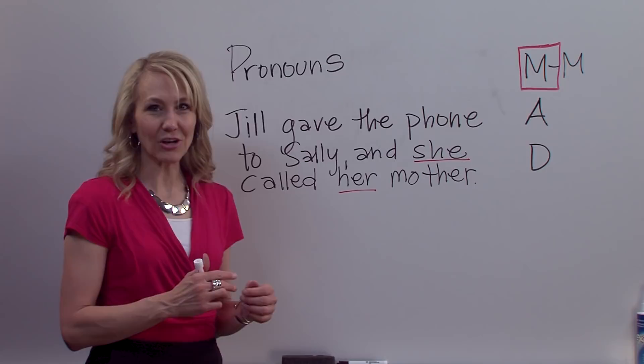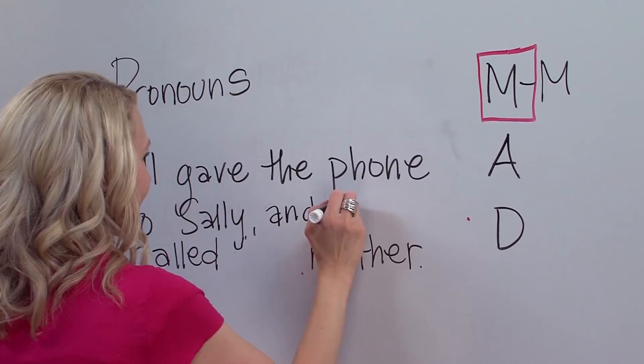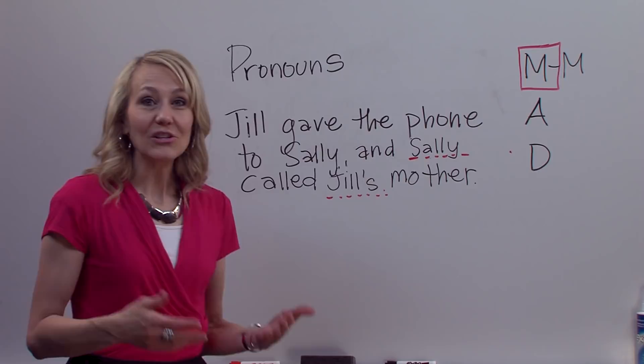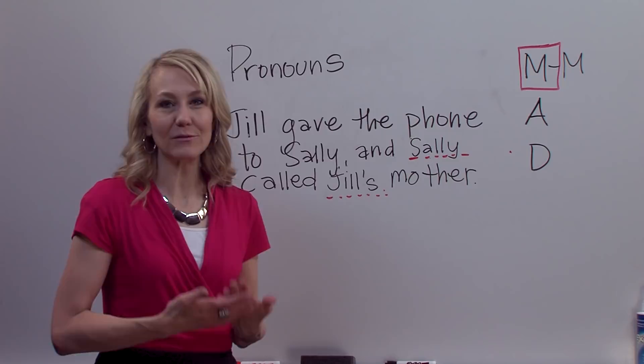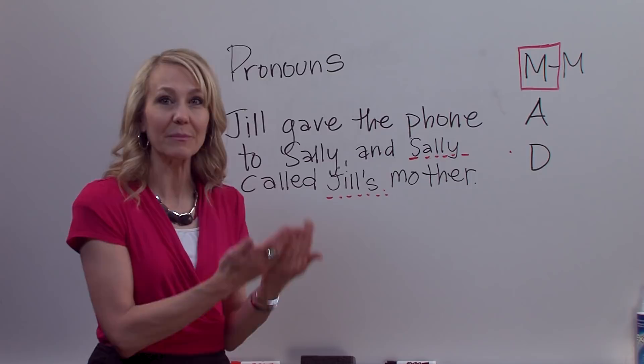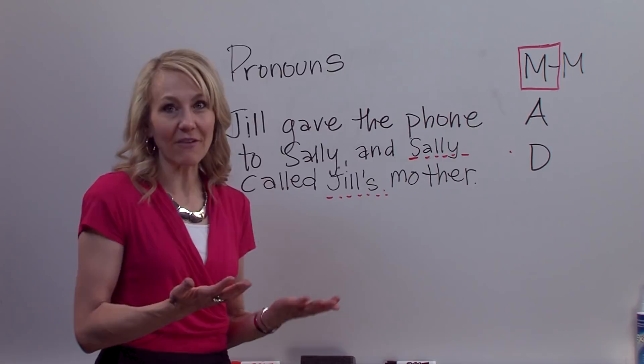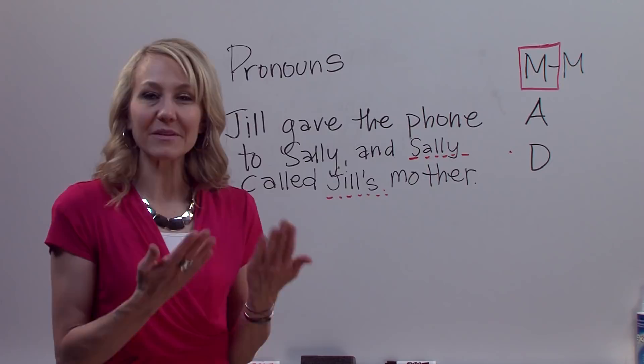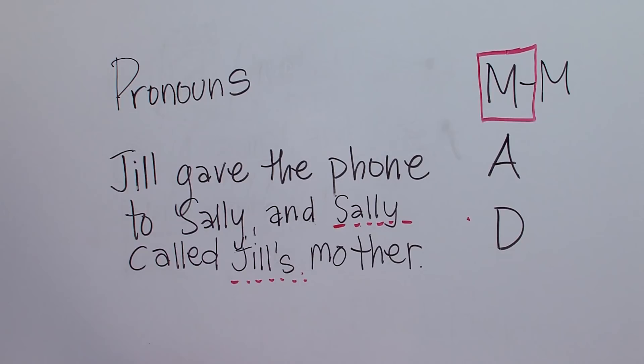Now I've fixed the sentence, and to do that I basically had to remove the pronouns entirely. Because the pronouns were both feminine and there are two feminine referents, there really isn't a great way to leave the pronouns in and keep that modifier relationship clean and correct. So I remove them and put in the actual referent so that there is absolute clarity — that Sally called Jane's mother. Now let me show you the very next type of modifier relationship that we want to keep clean and clear.